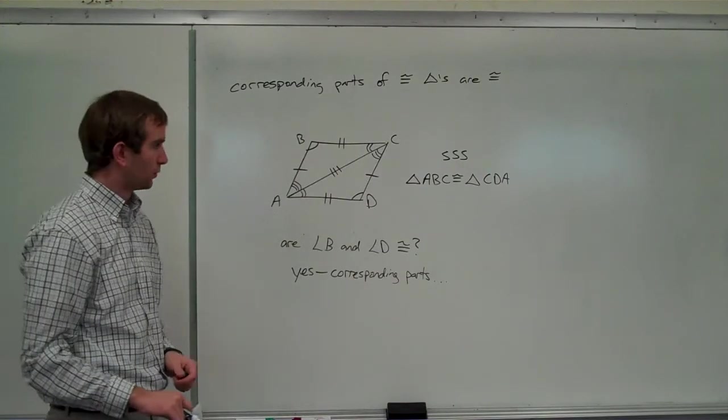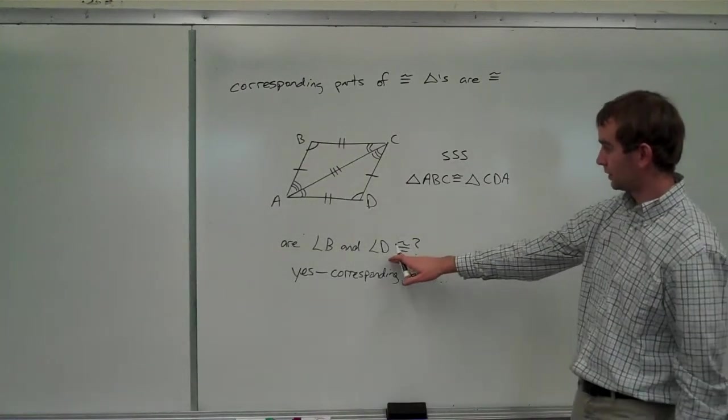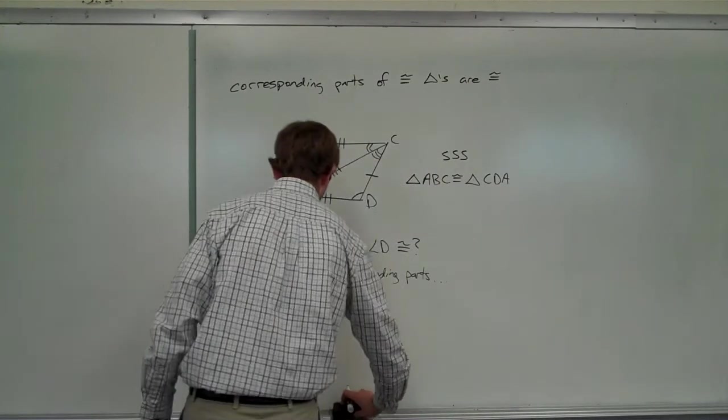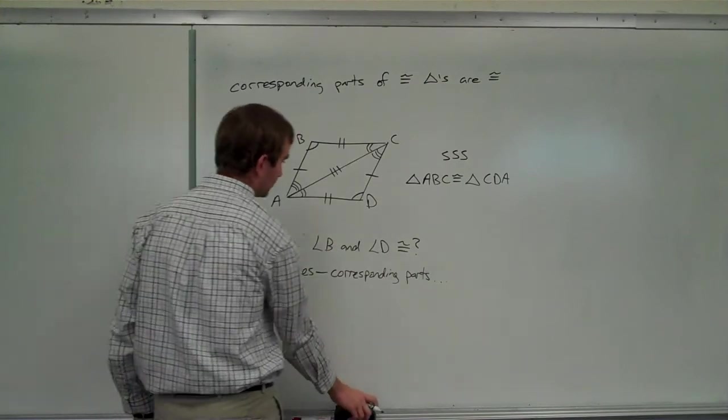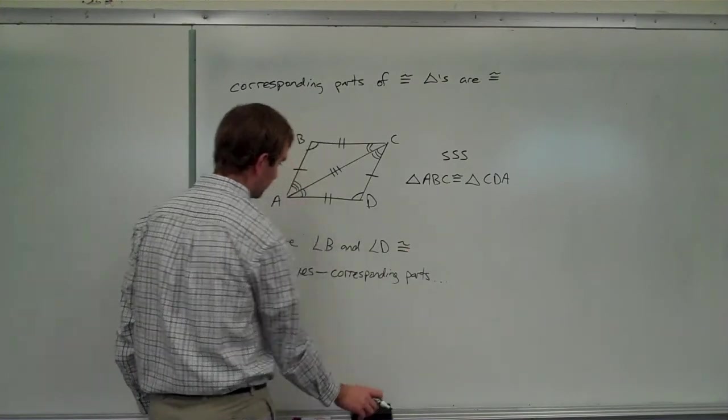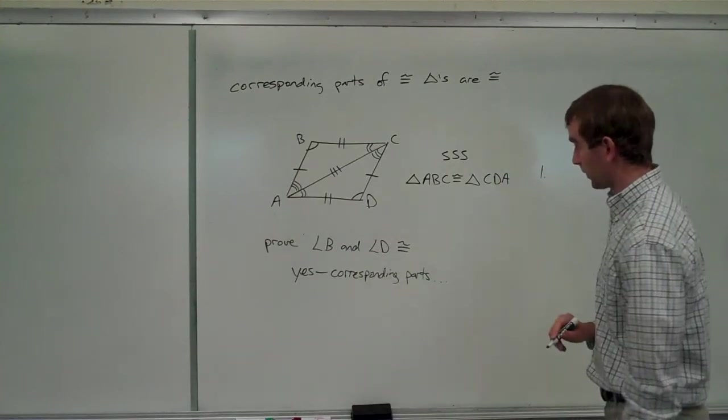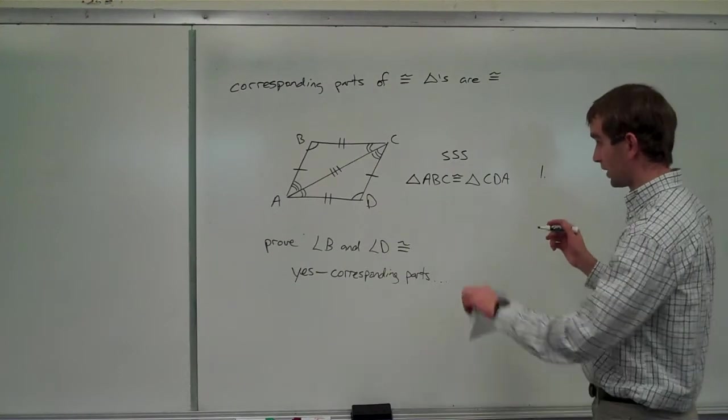So, if you have to write a proof, let's go ahead and do that real quick. To say, to answer this, really, we're trying to prove that angle B and angle D are congruent to each other. That's our charge now. First, we have to show that the triangles are congruent. So, we take our given information.